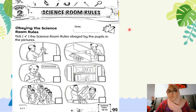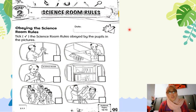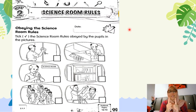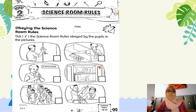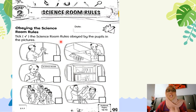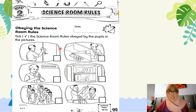Sekarang buka buku aktiviti sains awak — yang warna biru tu. Can you open your science activity book? Turn to page 11. Mari kita tengok latihan yang awak akan buat sebentar lagi. Untuk muka surat 11: obey the science room rules. Tick the science room rules obeyed by the pupils in the pictures — awak kena tandakan betul pada peraturan bilik sains yang diikuti oleh murid-murid di dalam gambar. Kalau murid itu mengikut peraturan sains, awak tick.